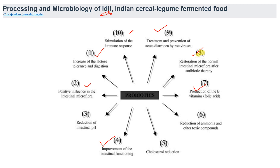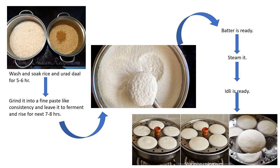Here is a simple pictorial flow chart for those who don't know how idli is made. First, wash and soak rice and black gram dal (urad dal) for four to six hours. Some people add a few fenugreek seeds — about one tablespoon — to enhance the flavor. Use a 2:1 proportion of rice to dal. After soaking, grind into a fine paste consistency.